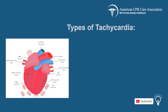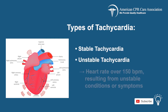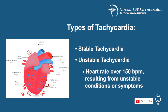There are two types of tachycardia: stable and unstable. Unstable tachycardia is when the heart rate is so fast it causes unstable conditions and symptoms, resulting from a heartbeat of over 150 BPM.